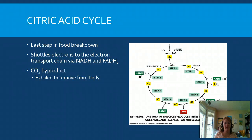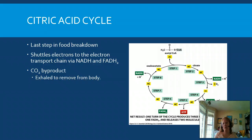This is also where CO2 is produced — a major byproduct that's exhaled as we go about our daily lives, and this is part of our breathing process. We're going to go through each of the eight steps in the citric acid cycle. There's no specific one step I want you to focus on like there was in glycolysis, but I do want you to be familiar with these eight steps and the main products of each.